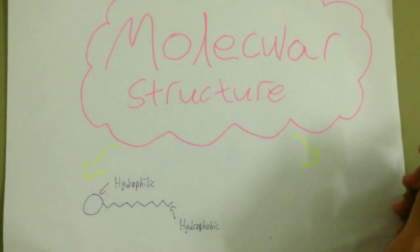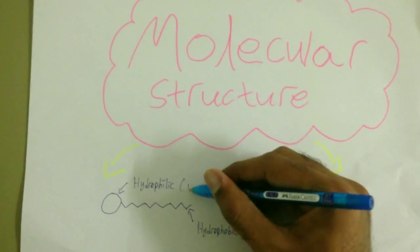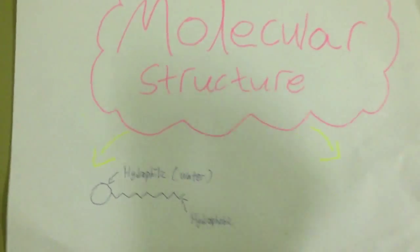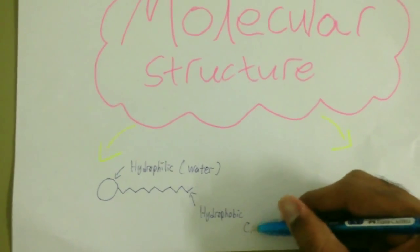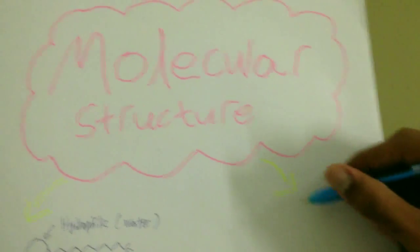The molecular structure of a surfactant consists of hydrophilic head which is water soluble and also hydrophobic tail which is non-water soluble. Hence, the group is known as amphiphilic.